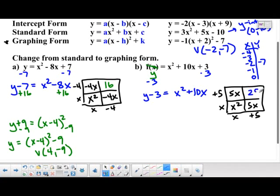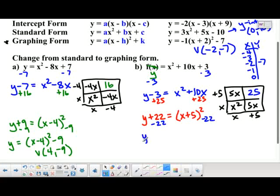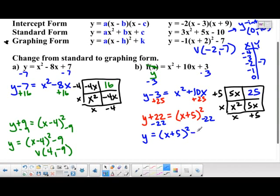If we take 5 times 5, we get 25. So I need to add 25 to both sides. 25 minus 3 is 22, so we get y plus 22. On this side, we can rewrite this as x plus 5 quantity squared. Then to finish up, we subtract 22. Therefore, y equals x plus 5 quantity squared minus 22. Once again, why would we want to do this is now we know the vertex. The vertex is negative 5 comma negative 22.